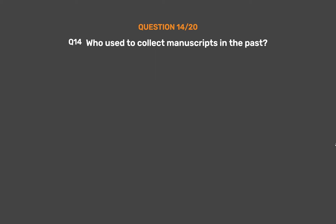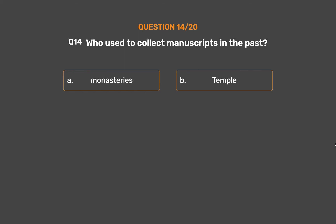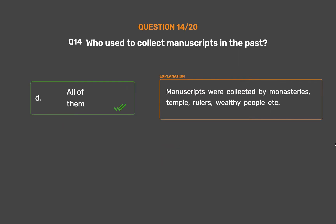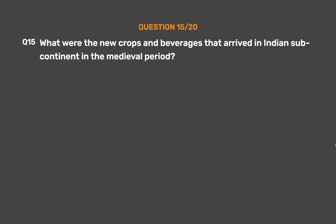Question 14: Who used to collect manuscripts in the past? Option A: Monasteries. Option B: Temples. Option C: Rulers. Option D: All of them. The correct answer is Option D: All of them. Manuscripts were collected by monasteries, temples, rulers, and wealthy people.